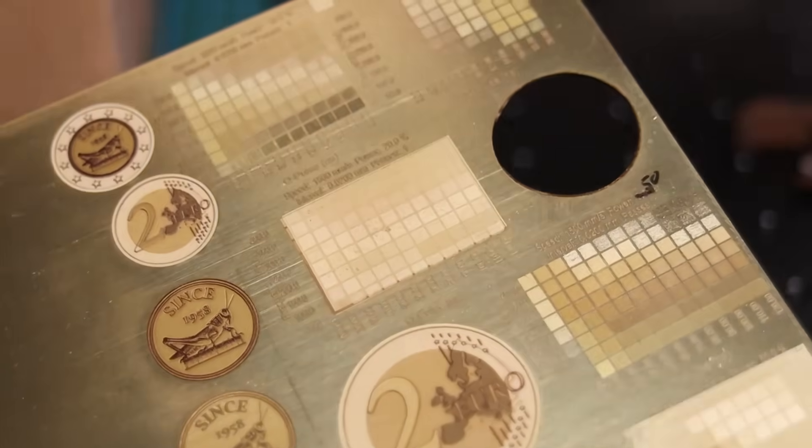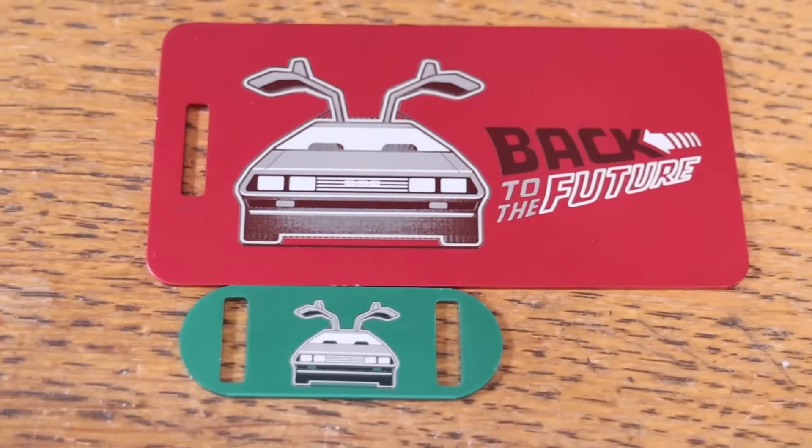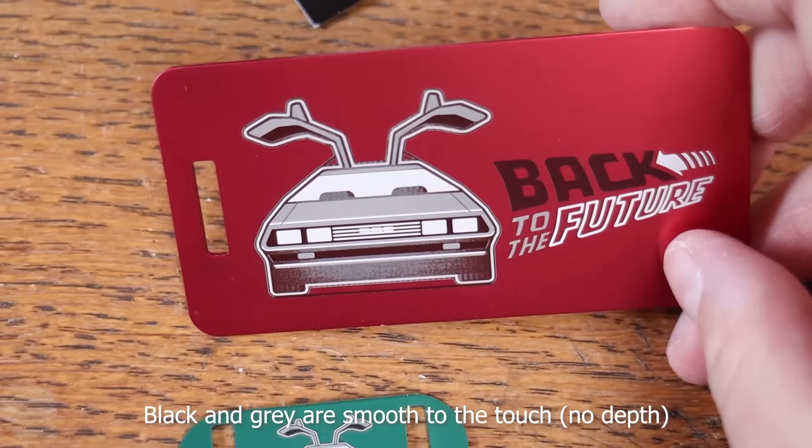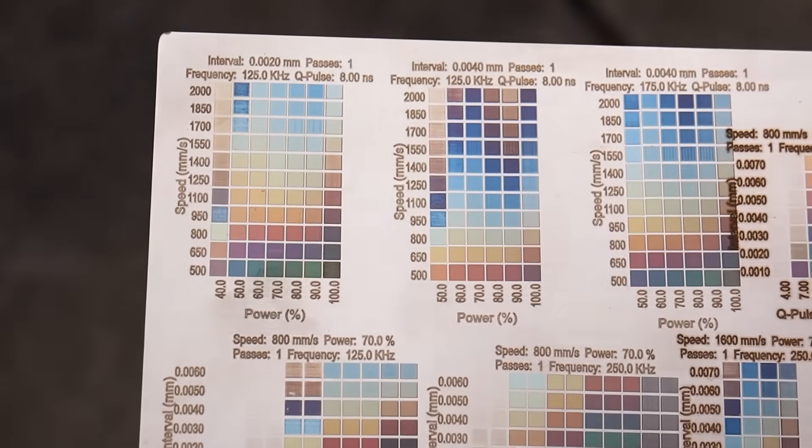The CommMarker Titan is a powerful machine that can do everything lower-powered machines can do. I've reviewed several 60-watt machines and used them to engrave anodized aluminum in white, black, and gray, create a full spectrum of colors on stainless steel using annealing, and remove rust.